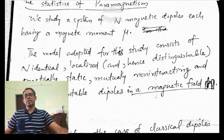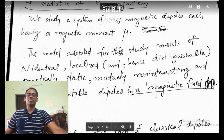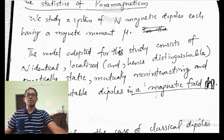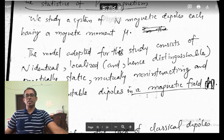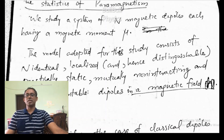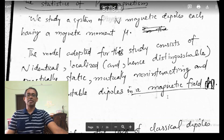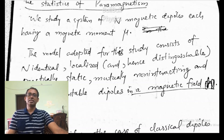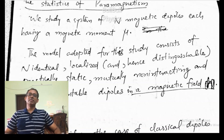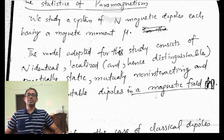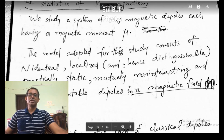So they are identical, they are localized, and since they are localized, they are distinguishable — as in the case of the harmonic oscillator. We assume that the dipoles are distinguishable. They are practically static, that means they are not moving. They are mutually non-interacting — they are not interacting with each other. So, as we did in the case of the harmonic oscillator, the N-particle partition function can be obtained as simply the Nth power of the single-particle partition function, because they are not interacting with each other.